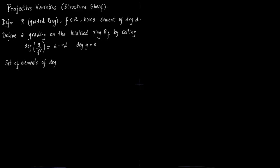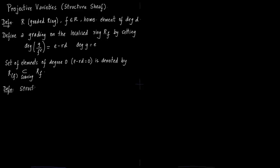G is a homogeneous polynomial and F is a homogeneous polynomial, and the grading is defined by this degree. Some elements have degree zero, and these are the most important ones for our purpose. You denote this ring as R with brackets around F — R_(F). This is a subring of R_F: the degree-zero part taken out of the graded ring R_F. So step one: you have ring R. Step two: localize it. Step three: take out the degree-zero part.